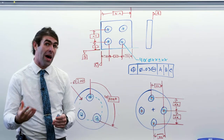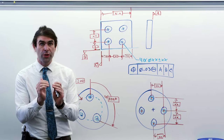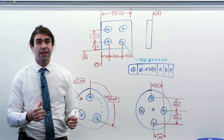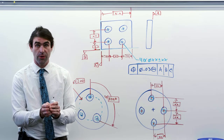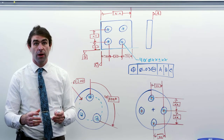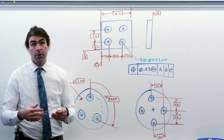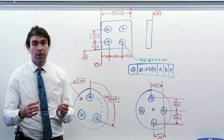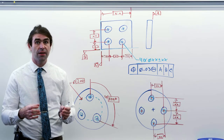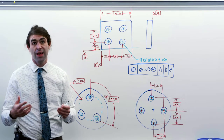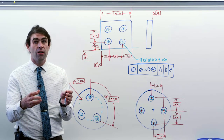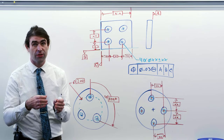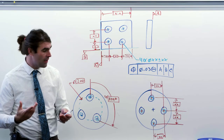Let's move to something called bi-directional position tolerancing. When you put the diameter symbol in the feature control frame and apply it to a cylindrical feature, it indicates a cylindrical tolerance zone — but it doesn't have to be. You could have a square or rectangular tolerance zone. There could be a situation where it's acceptable for a hole to be further left or right but not up or down. Say you have a slotted part fitting on top of a part with a hole — it might be okay for that hole to move a lot in one direction and not so much in the other.